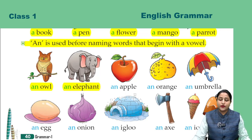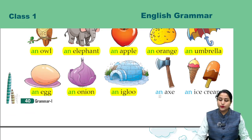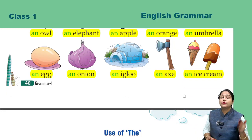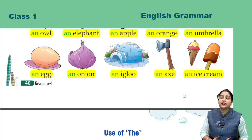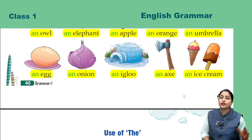Next examples: an elephant, an apple, an orange, an umbrella, an egg, an onion, an igloo, an ice cream. Matlab wo words jinme starting mein vowels hain, unse pehle hum AN lagate hain. Aur wo words jiski spelling kisi consonant se start hoti hain, unse pehle hum A lagate hain.